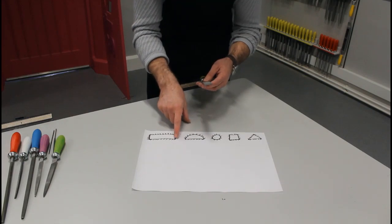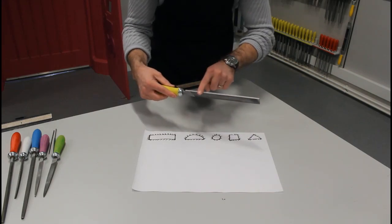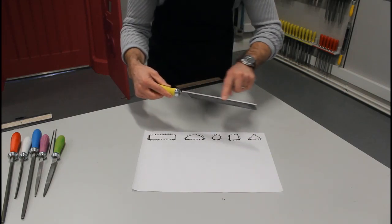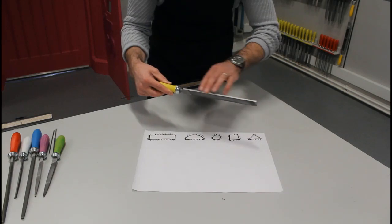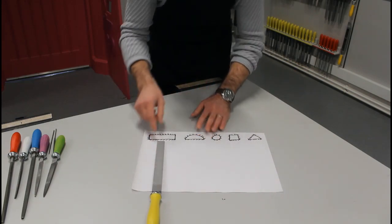And you'll notice this one has no lines, indicating that there's no cutting surface. Like our flat file here, we have a smooth surface on one of the edges, which is known as the safe edge. So that's our flat file.